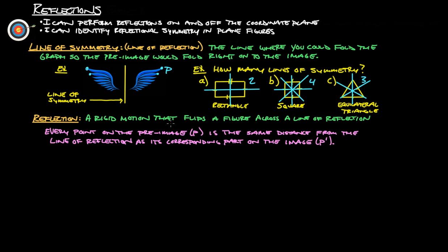A reflection is a rigid motion that flips a figure across a line of reflection. Every point on the pre-image, P, is the same distance from the line of reflection as the corresponding point on the image, which we call P prime. So if we measure the distance from P straight across to the line, that distance will be the same as the distance from the line to P prime. These distances are equal on both sides.